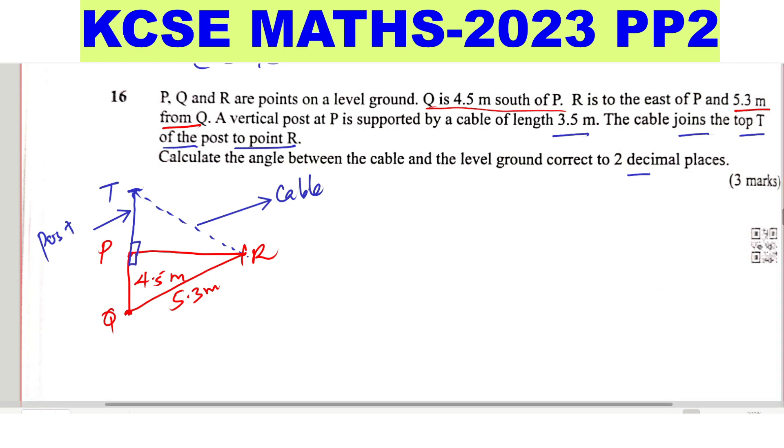So having this sketch it will be now easy to work out the angle between the cable and the level ground. So this is the ground. So the angle between the cable and the level ground is that angle. So how do you get that? You consider this triangle. So we only have the length of the cable is given as 3.5. This one is 3.5 meters.